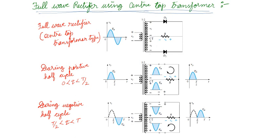During the positive half cycle (0 to T/2), if you observe diode D1, it has positive voltage at its anode — so D1 will conduct. Diode D2 is seeing minus potential — so D2 is reverse biased (open circuit, not conducting). The current flows through D1, through R, producing a positive output V0 = VI.